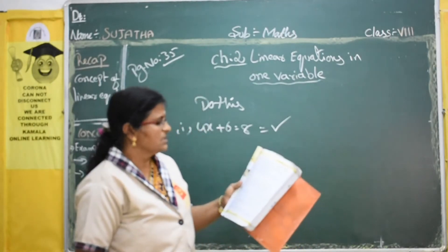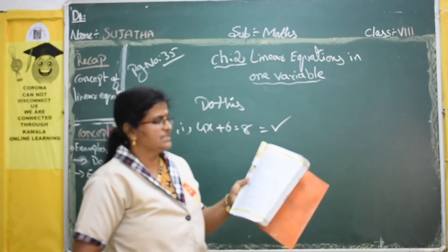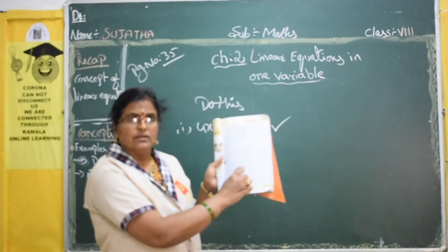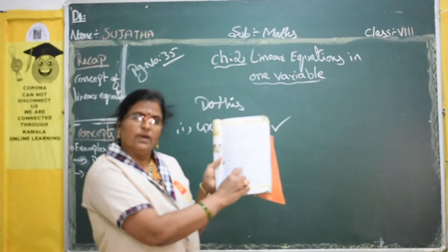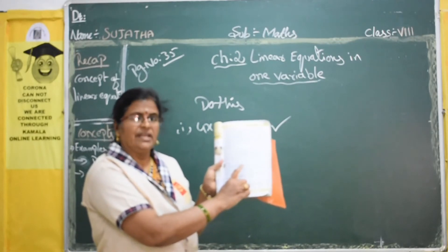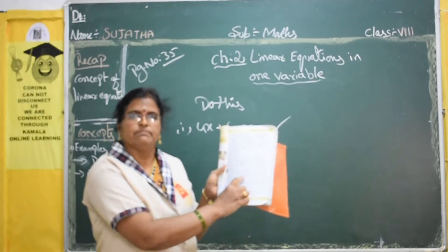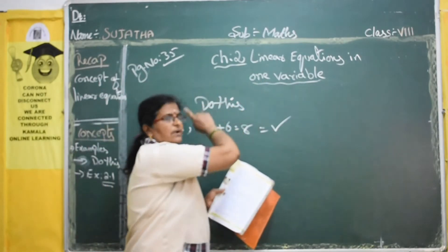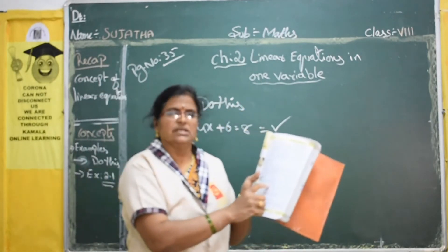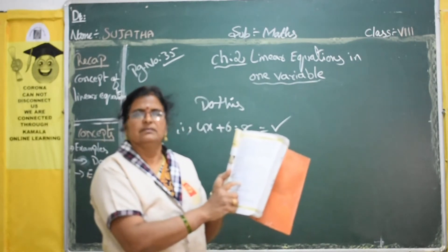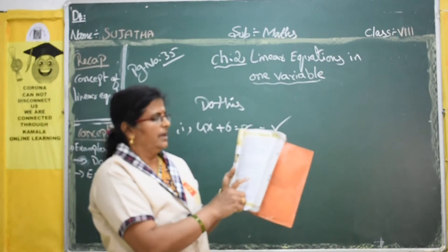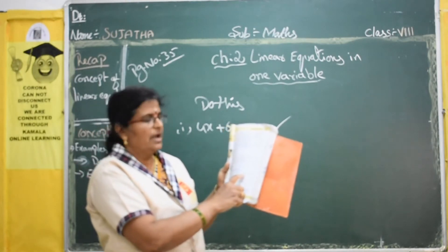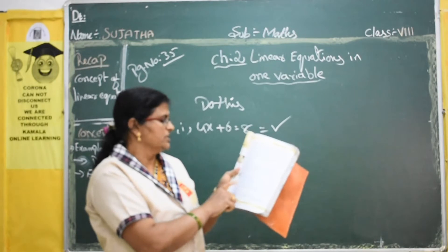Second: 4x minus 5y equals 9. It is a linear equation, but it has two variables. Here we are learning only linear equations in one variable, so note that it has two variables. Third one: power is 2 and variables are also 2, so it is not a linear equation. For the fourth one, when you have a product like xy, power is 1 plus 1 equals 2, making it a quadratic equation — not linear.